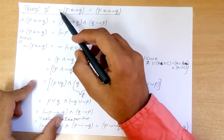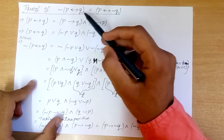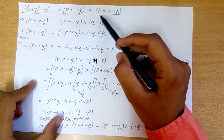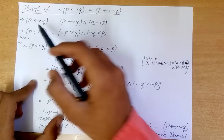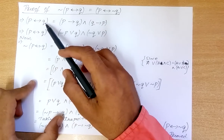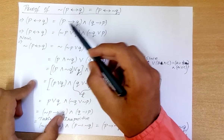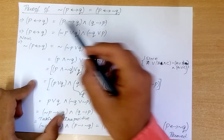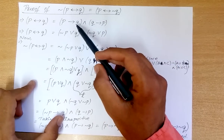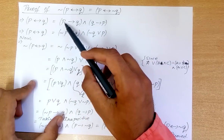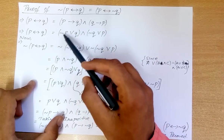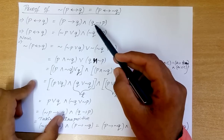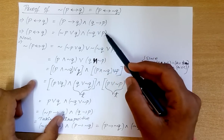The proof of negation of (P if and only if Q) equals P if and only if negation of Q. P if and only if Q can be written as (P implies Q) and (Q implies P) — this is just the definition. We also know that P implies Q can be written as negation of P or Q, and similarly Q implies P as negation of Q or P.